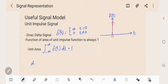In the discrete time domain, this unit impulse signal is represented as one when N equals zero and zero when N is not equal to zero.